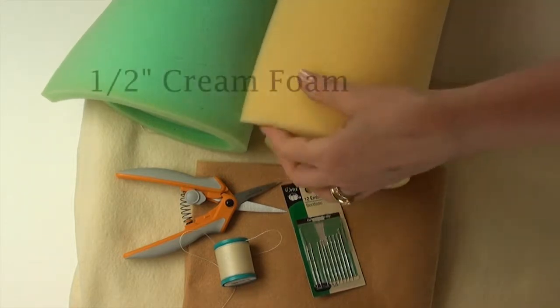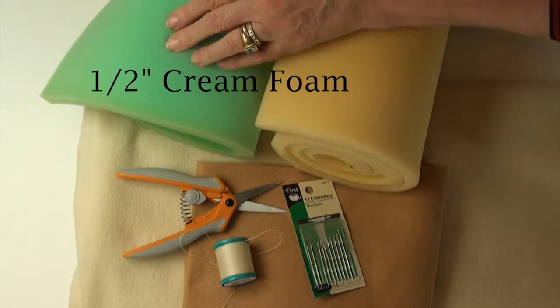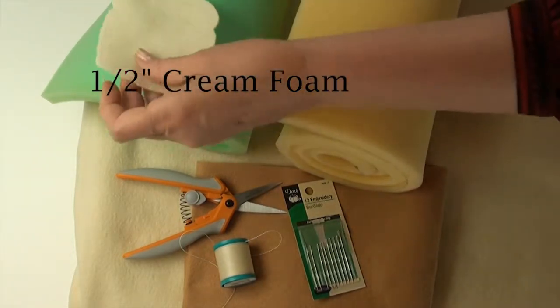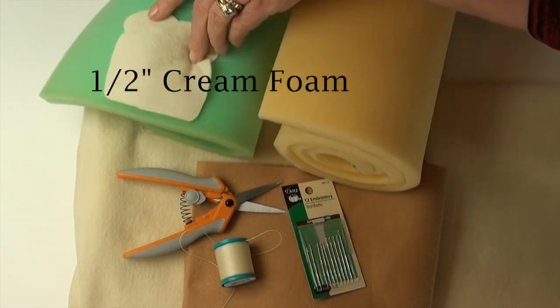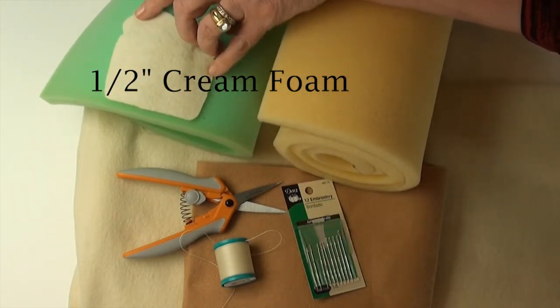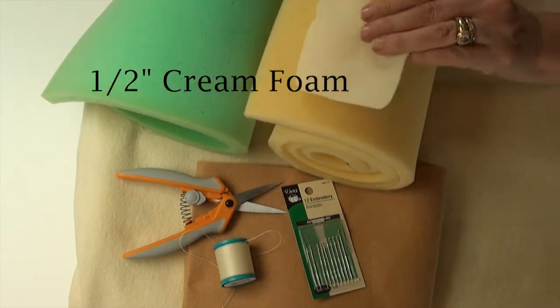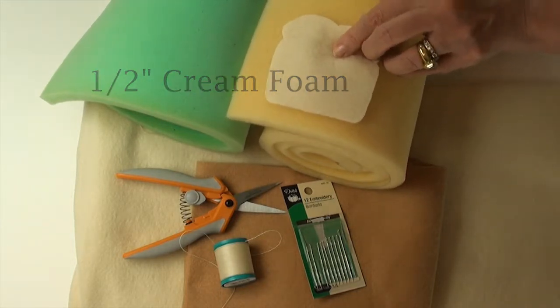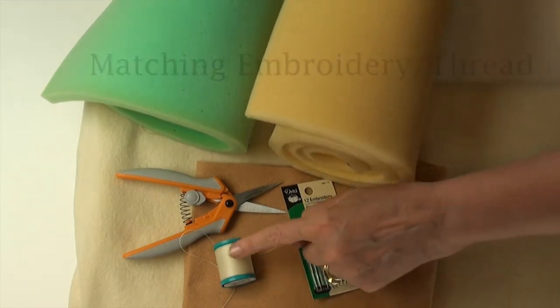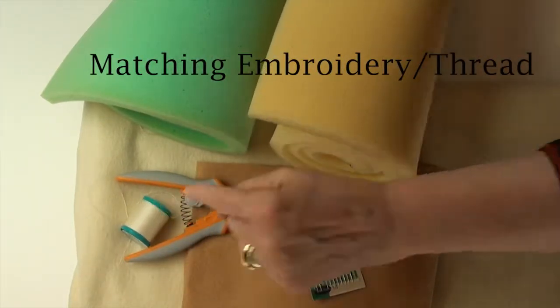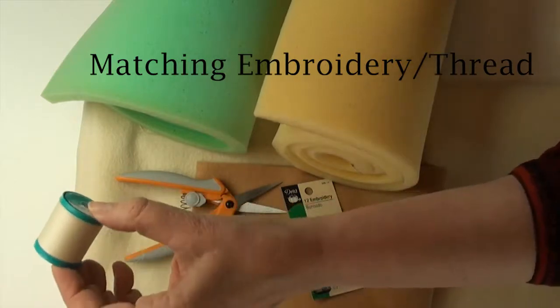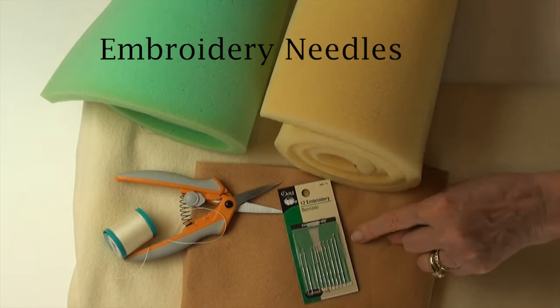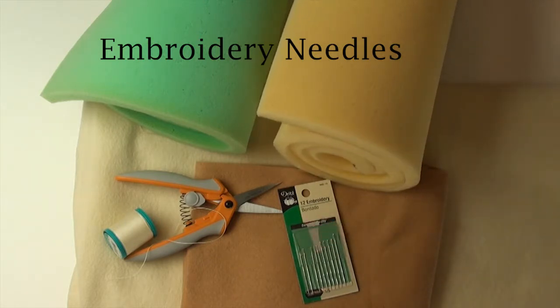Then you also need some foam. This is half inch foam and it's usually quite easy to find in green. I recommend you not get green because if you put bread on top of it or white felt on top of it, it looks like your bread is turning moldy. You can see the green through it. So I get either white or cream or yellow foam and that works quite well with a piece of bread. Also you're going to want some thread that matches your lighter color. I recommend embroidery floss but regular thread will work as well. And you need some needles. Get embroidery needles. They have large holes so embroidery floss will fit through it.